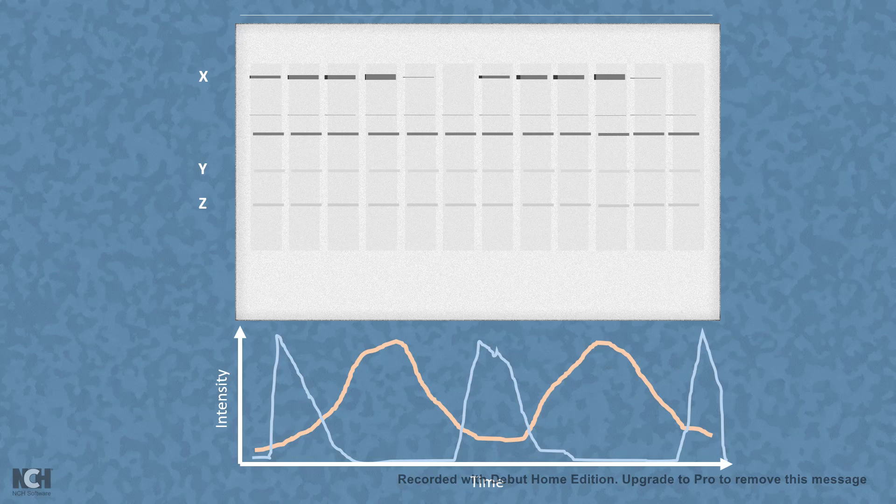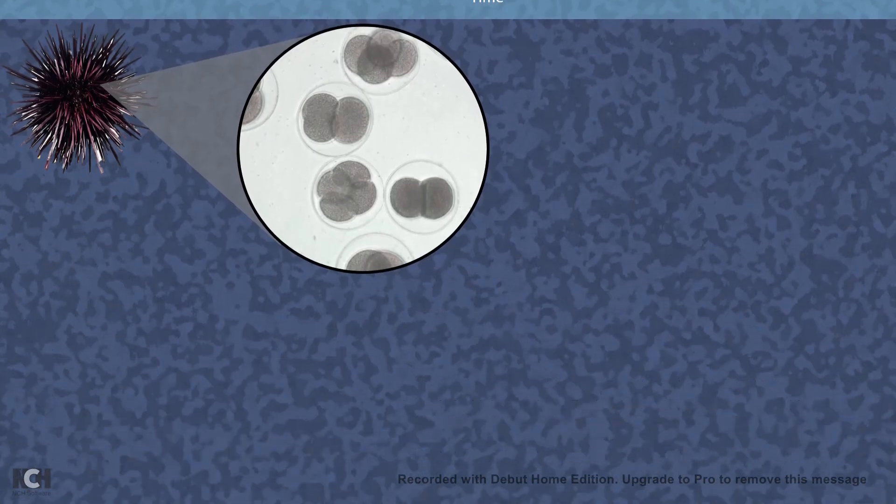This graph has a striking similarity with the graph of MPF activity. Does that mean that MPF is actually this mysterious substance which is cycling in a particular interval? Well, he named this substance as cyclin because it has a cyclic appearance and disappearance. That is why he named it cyclin.